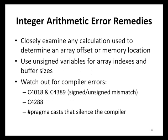Fortunately, there are several actions developers can take to address integer arithmetic errors. First, closely examine any calculation used to determine an array offset or memory location — code review and scanning tools can help. Second, use unsigned variables for all array indexing and buffer sizes, since indexed data should not have negative indexes. Lastly, code compilers can provide indication of possible integer arithmetic errors; the Microsoft Visual C++ compiler, for example, emits warning messages whenever it detects potential integer arithmetic errors in code.